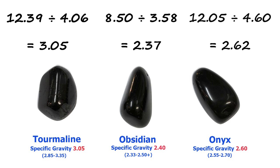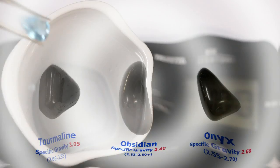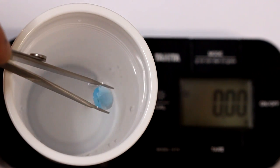We can then refer that to the known specific gravity of the stone, and you can see in this case that the specific gravity is very close to the exact specific gravity listed for each of these different minerals. So I've confirmed that we have Tourmaline, Obsidian, and Onyx.